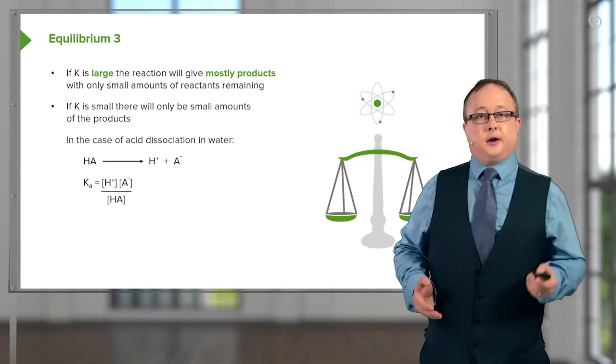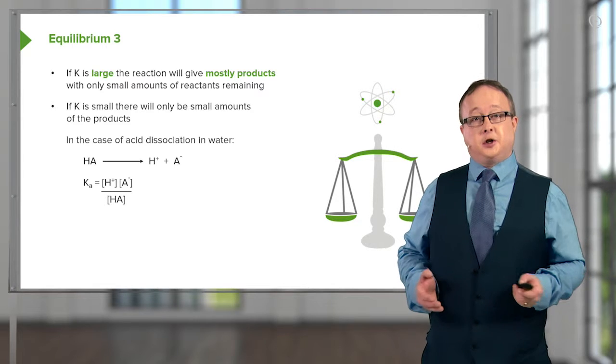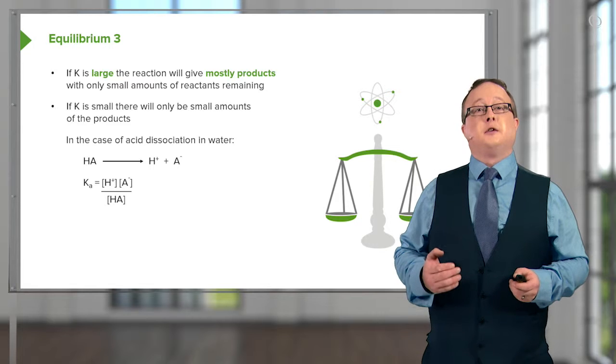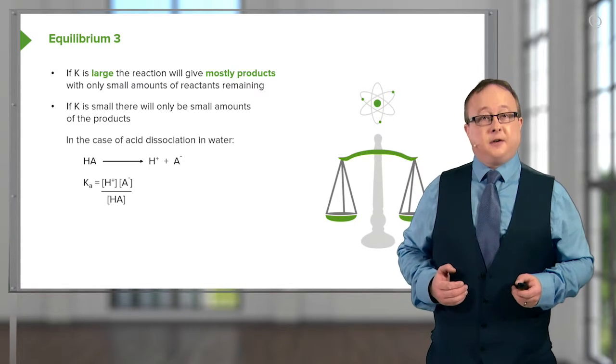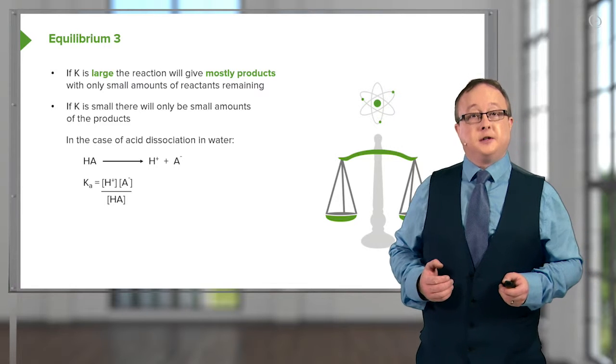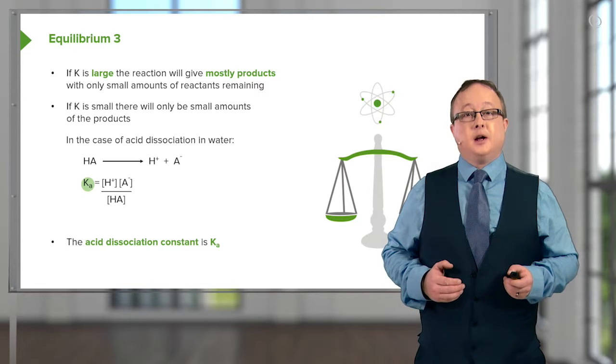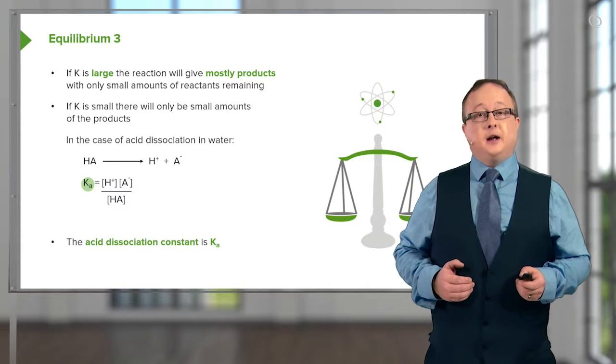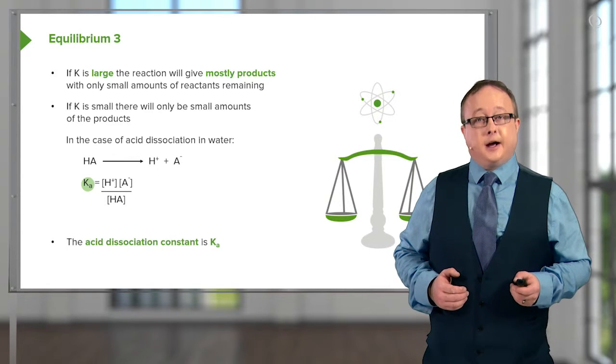Sometimes, you'll come across other equilibrium constants which are specific, for example, for complexation. And they are often given as KD, which is the equilibrium associated with dissociation. But KA is specifically how much of H plus is created from a given concentration of HA. The acid dissociation constant is always given as K subscript A.